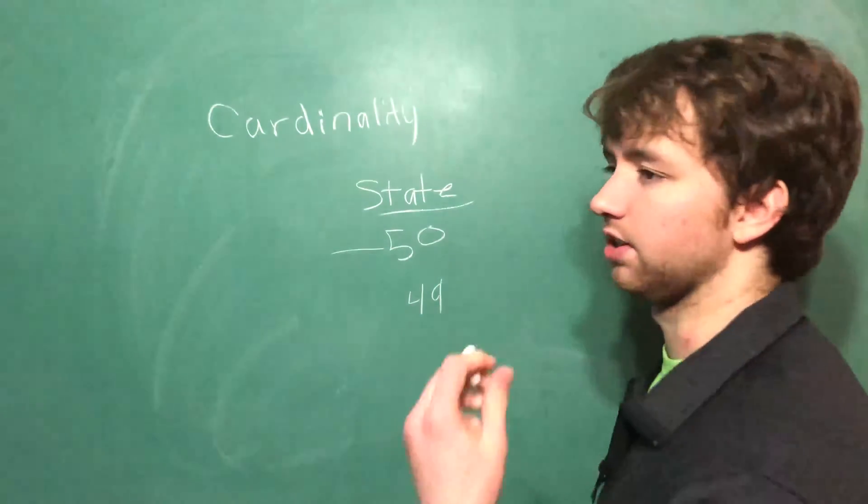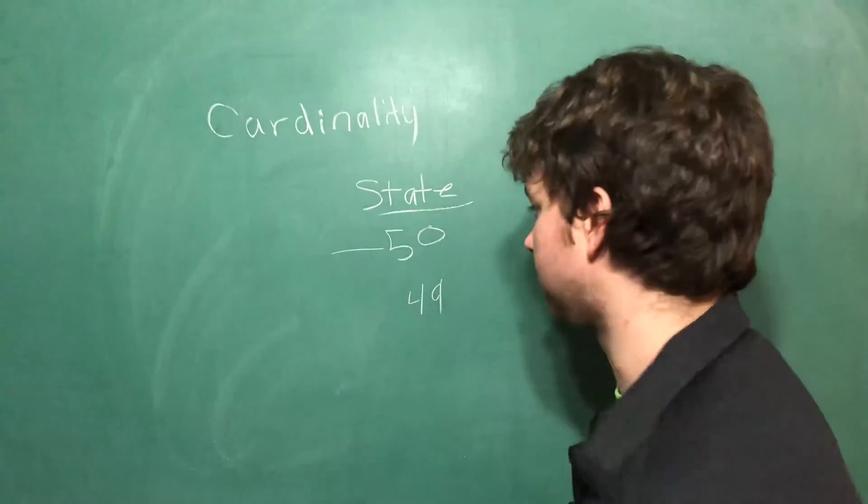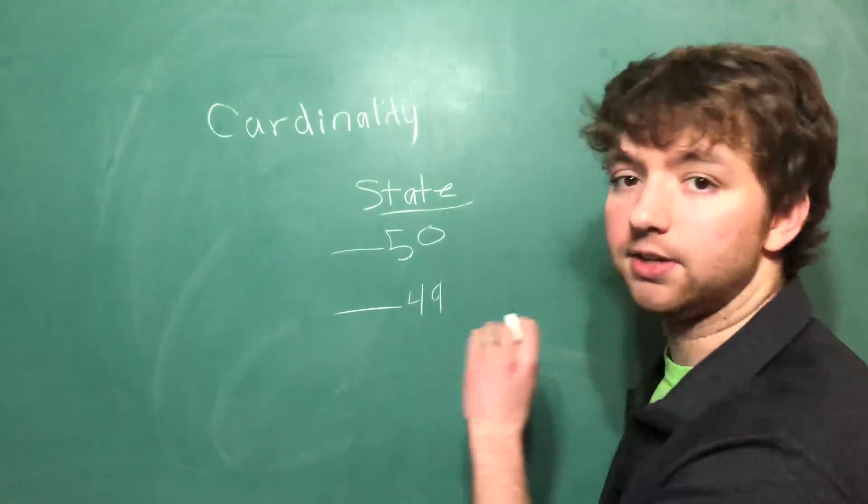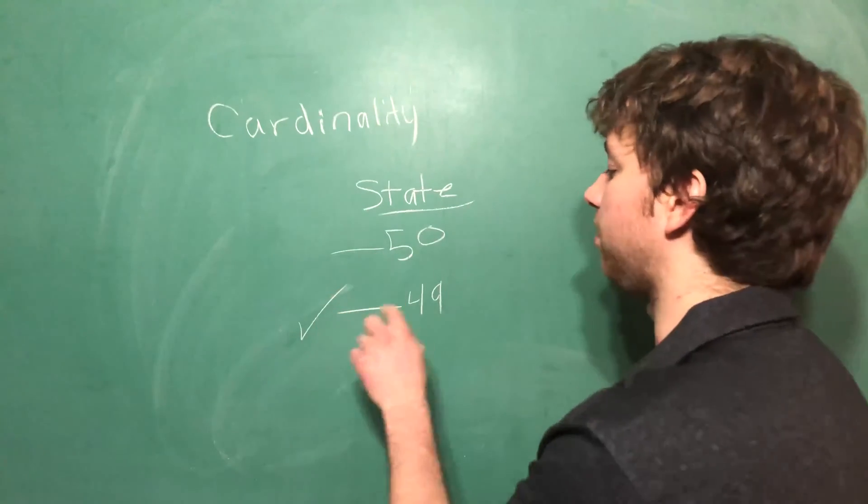So you can see that this one is the total possible values and this one is the actual amount represented in our data set. And this is the one that we are going to care about.